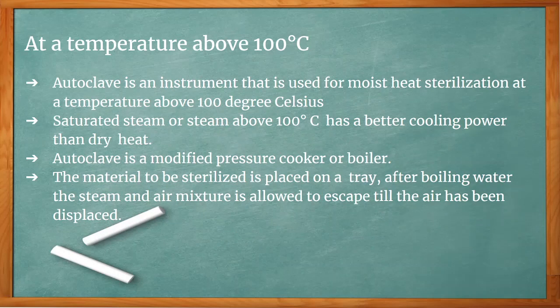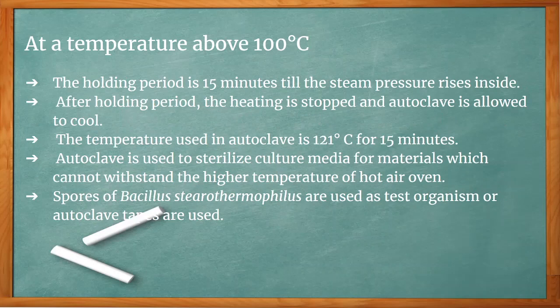At temperatures above 100 degrees Celsius, an autoclave is used for moist heat sterilization. Saturated steam above 100 degrees Celsius has better killing power than dry heat. The autoclave is a modified pressure cooker or boiler. Material is placed on a tray, water is boiled, and the steam-air mixture is allowed to escape until air is displaced. The holding period is 15 minutes at 121 degrees Celsius. After the holding period, heating is stopped and the autoclave cools. It is used for culture media and materials that cannot withstand the higher temperatures of the hot air oven. Spores of Bacillus stearothermophilus or autoclave tapes are used as test organisms.